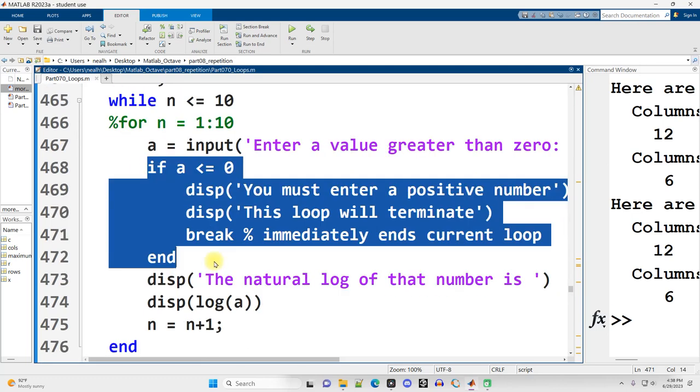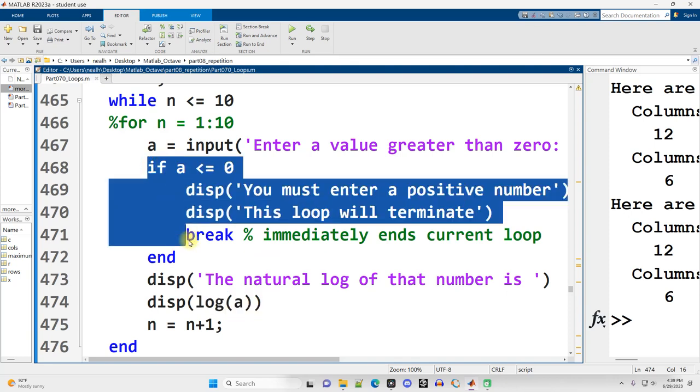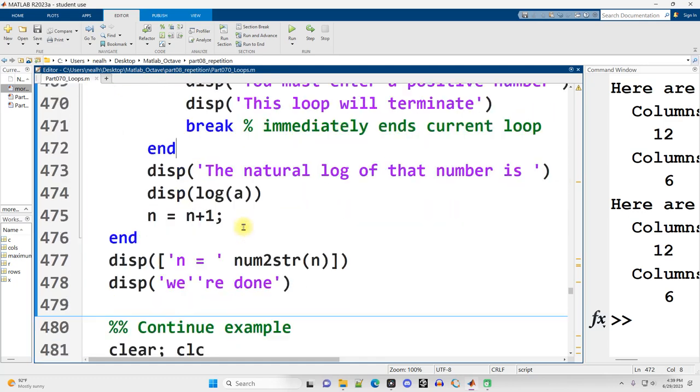Otherwise, we'll skip this code, and we'll display something out and just increase n by 1. We'll display the logarithm, the natural logarithm of a. You can't take the natural log of 0 or negative numbers, so this will prevent us from doing that. And then after the while loop is finished, we'll display out the value of n, and we'll display that we're done.